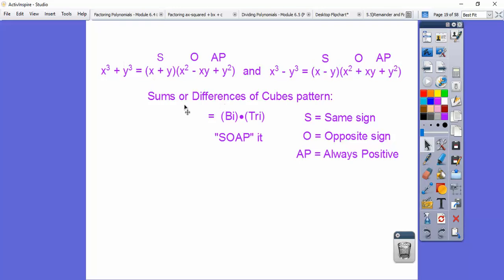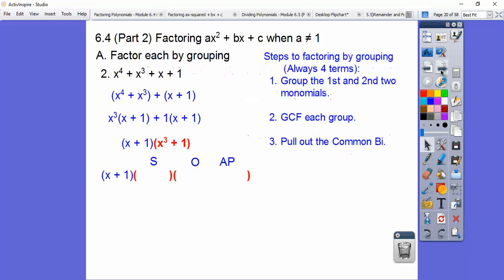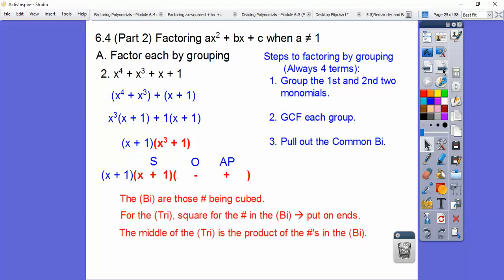So the sums of cubes, it goes binomial times a trinomial. Then we soap it right there. And so the guys that are being cubed goes in here. So this would be x plus 1. This one's this guy squared. This one's this guy squared. And then we multiply them to get to the middle one. So bi times tri, soap it. Same sign, opposite sign, always positive. So if that's a plus, that's the same. It's a plus. This is opposite, so it's a minus. That's a plus right there. x plus 1 goes in the middle right there.